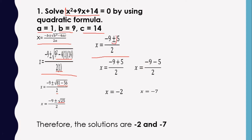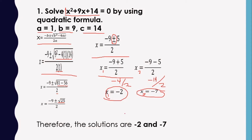Separate the plus and minus values. Solution 1: x₁ equals negative 9 plus 5, all over 2. Solution 2: x₂ equals negative 9 minus 5, all over 2. Negative 9 plus 5 is negative 4, over 2, so x₁ equals negative 2. Negative 9 minus 5 is negative 14, over 2, so x₂ equals negative 7. Therefore, our solutions are negative 2 and negative 7 using the quadratic formula.